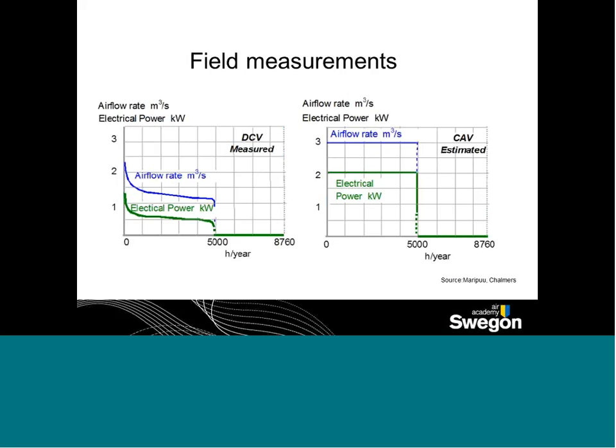Looking at some field measurement data, on the left is a building measured for the whole year. Of course it wasn't occupied all the time, and you can see how the electrical power and airflow rates — how much of the time you had higher airflow and higher electrical power consumption — how that tailed off. These are actual measured values from the building, compared to a DCV system where you'd have to make sure you covered peak demands all the time. Even so, there is significant energy to be saved.